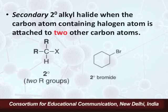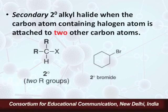Secondary halides are those in which the carbon atom containing the halogen atom is attached to two other carbon atoms, that is, two alkyl groups. The example given here is a cyclic compound — bromocyclohexane — which is a secondary alkyl halide, since the bromo group is attached to a carbon which is attached to two other carbons.